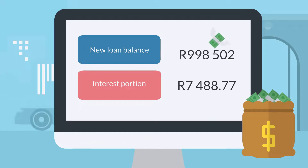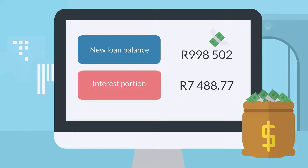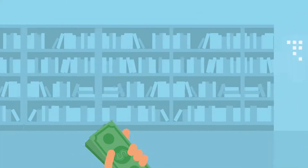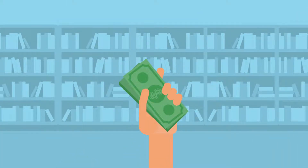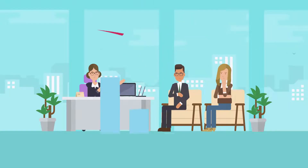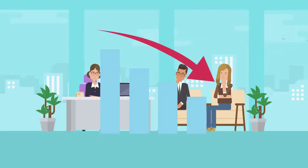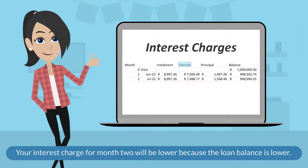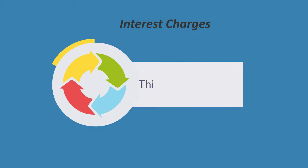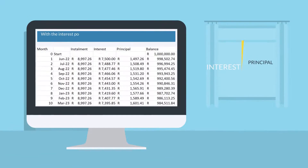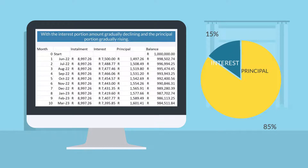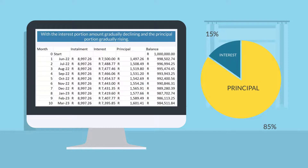When you make your payment again in month two, your new loan balance will be used to calculate the interest portion of your fully amortized payment. That means you would now owe a smaller amount to the lender in month two because your loan balance has been reduced slightly. Your interest charge for month two will be lower because the loan balance is now lower, as you can see in the table below. This process repeats itself month after month, with the interest portion gradually declining and the principal portion gradually rising, as you can see in the table below.